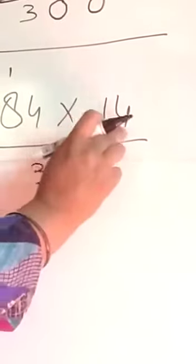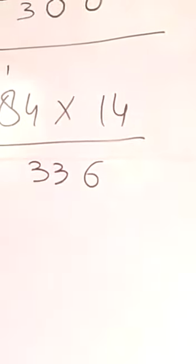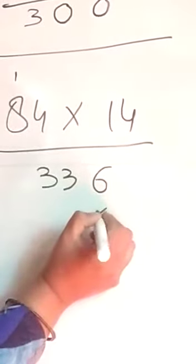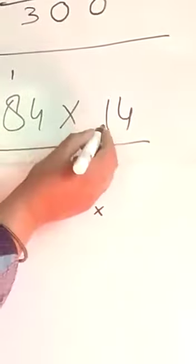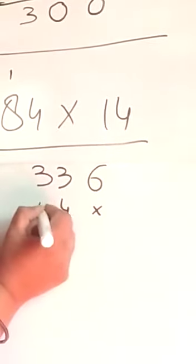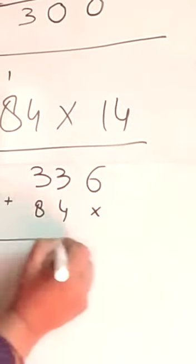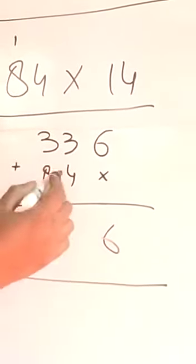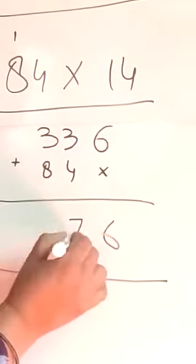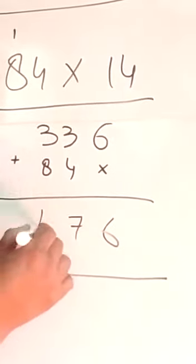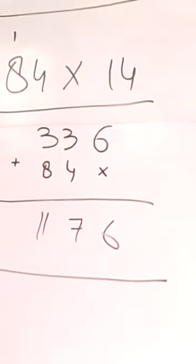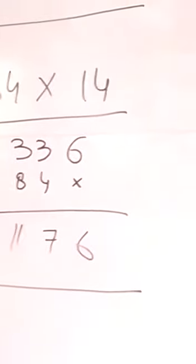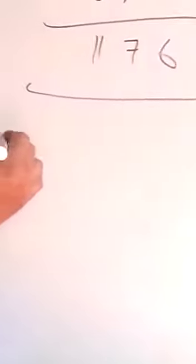Yeh cheez yaad rakhna — yeh pehle digit ke saath humne isko multiply kiya. Jab hum doosri digit ke saath aayenge, toh yahan par hum cross karenge. Doosri digit ke saath: 1×4 is 4, 0 then 1×8 is 8. Ab isko karenge: 8. 4 plus 3 is 7, 8 plus 3 is 11.